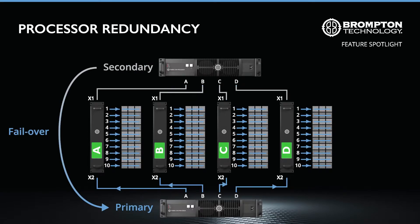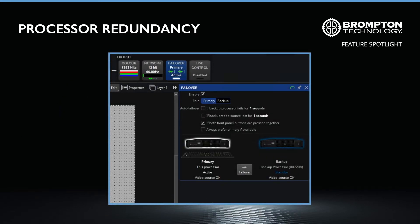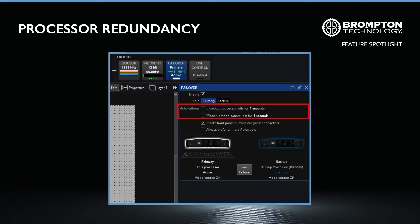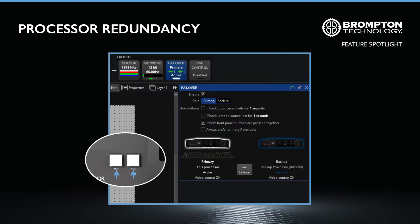The criteria for an automatic failover can be specified within the Tessera software. These include whether a failure has been detected with the primary processor outputting video, as well as whether it has lost its video source. A time for failover can be specified for each criteria, meaning the processor will wait that time before initiating the failover. A manual failover can be performed from within the Tessera software interface using the failover button, or simply by pressing the two front panel buttons on the SX40 at the same time, provided this option has been enabled within the software.